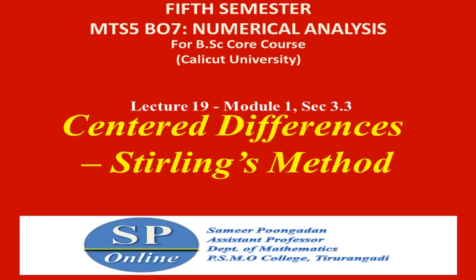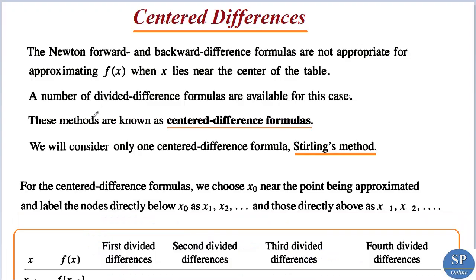Hello everyone. In this lecture we are going to discuss the topic Stirling's method. In the previous lectures we discussed Newton's forward and backward difference formulas. Newton's forward and backward difference formulas are not appropriate for approximating the function f(x) when x lies near the center of the table. Newton's forward formula is used when x lies at the beginning of the table, and the backward formula is used when x lies at the end of the table. If x lies near the center of the table we cannot use Newton's backward and forward formulas.